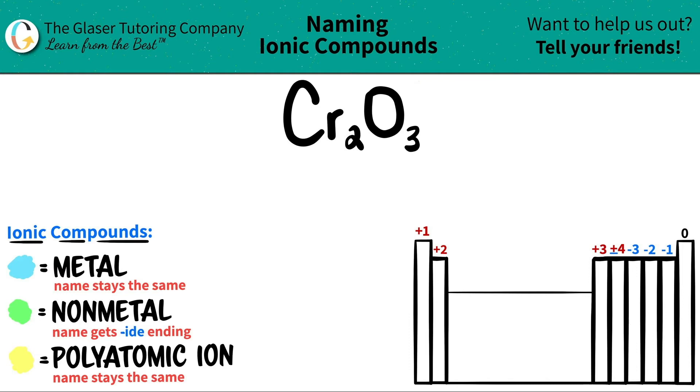Today, we are going to be naming the ionic compound Cr₂O₃. Now we have two different elements here. We have Cr, which is chromium, and O, which is oxygen.